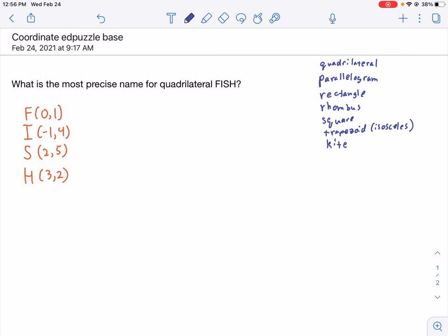I've written down all of our possible options: quadrilateral, parallelogram, rectangle, rhombus, square, isosceles trapezoid, or kite. So, let's get started.